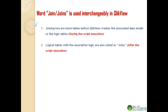The term 'join' is used interchangeably in QlikView. The first place where it is used is joining two or more tables before QlikView creates the associated data model or the logical tables — this happens during script execution. The second type of joins are the logical tables with the associative logic, also called joins, and this happens after the script execution completes.